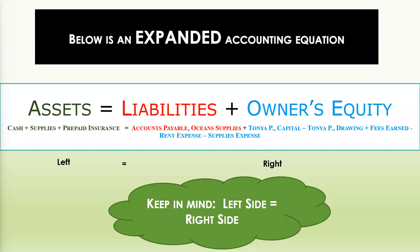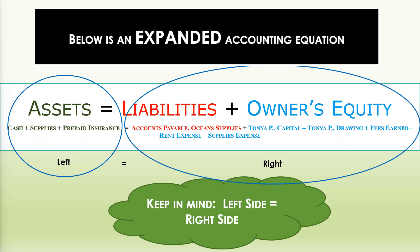Below is an expanded accounting equation. Although it is expanded, assets on the left still equal liabilities plus owner's equity on the right. The left side equals the right side. In this expanded form, you'll see the accounts listed under assets — for example, cash, supplies, and prepaid insurance.